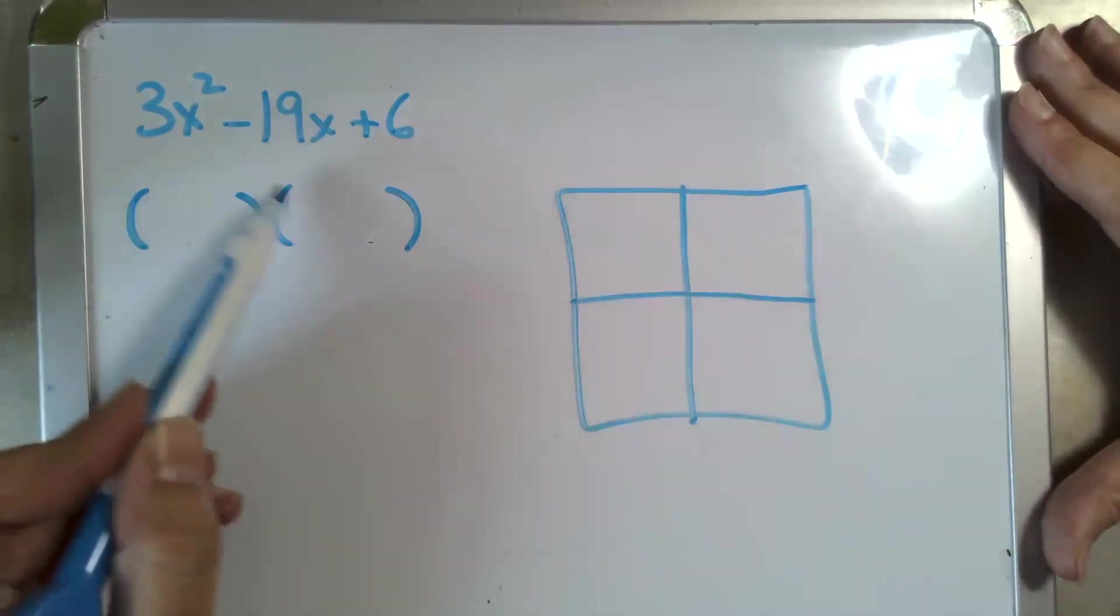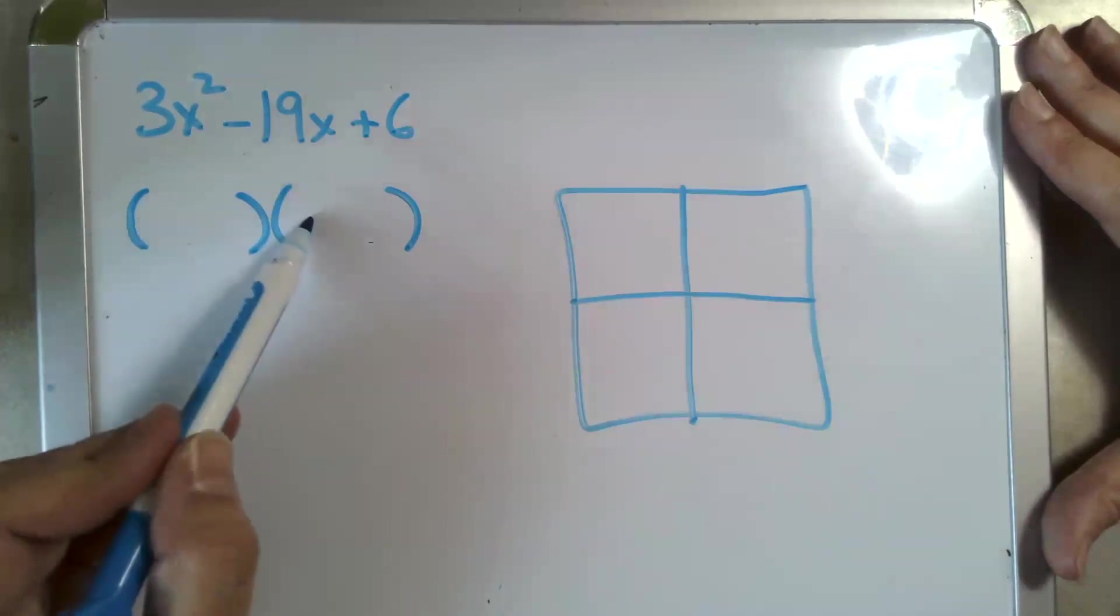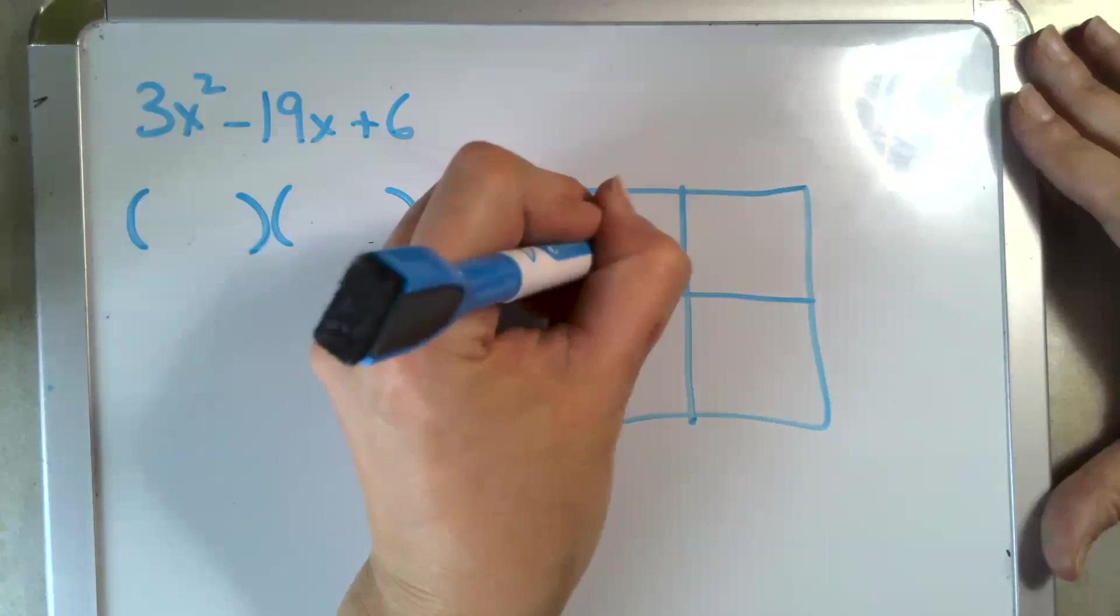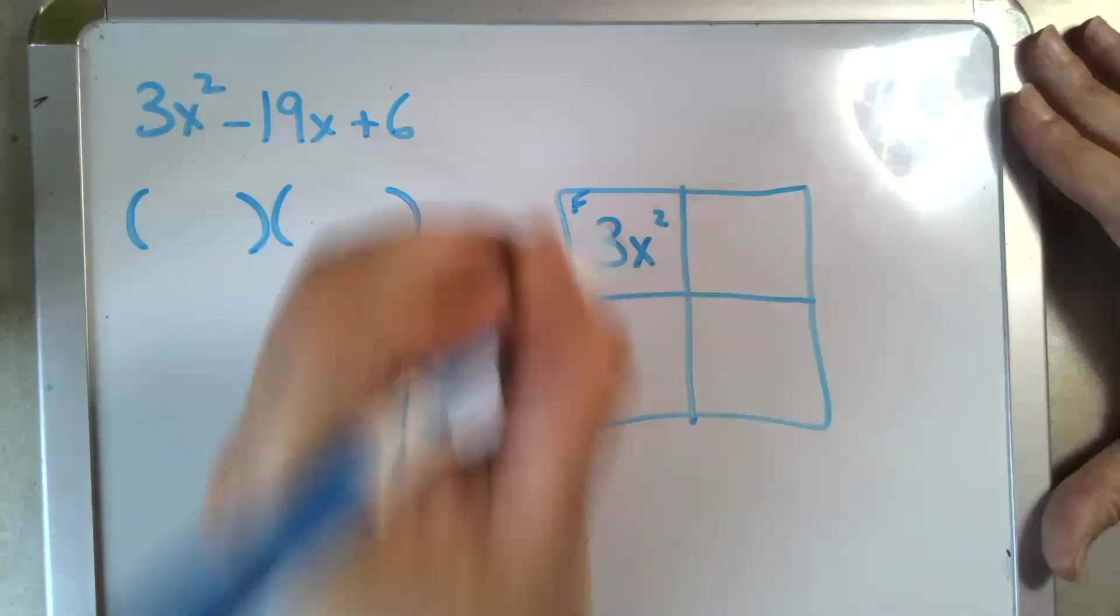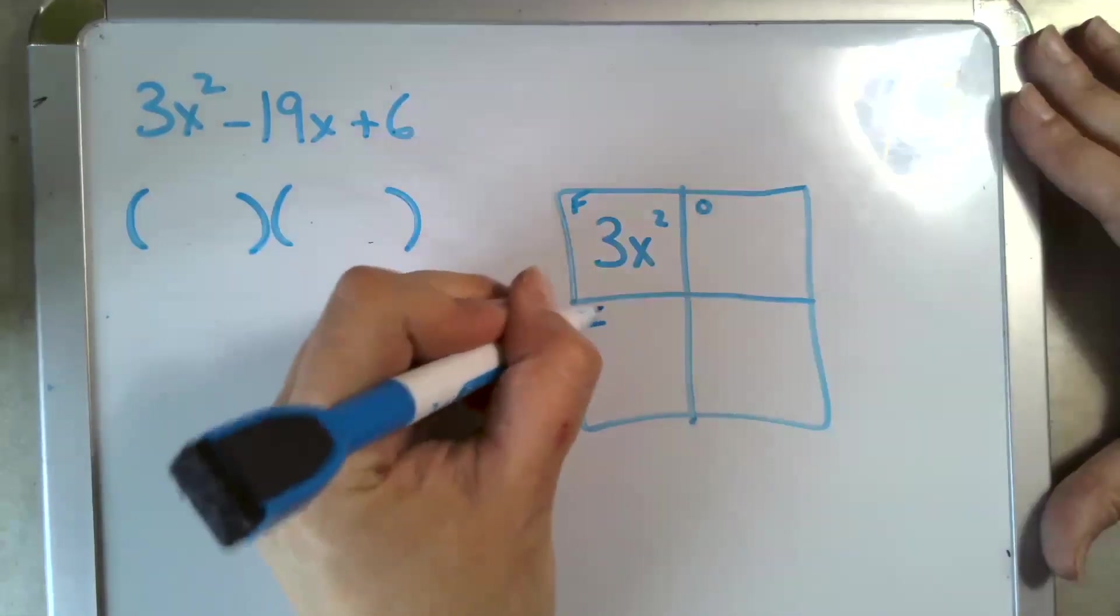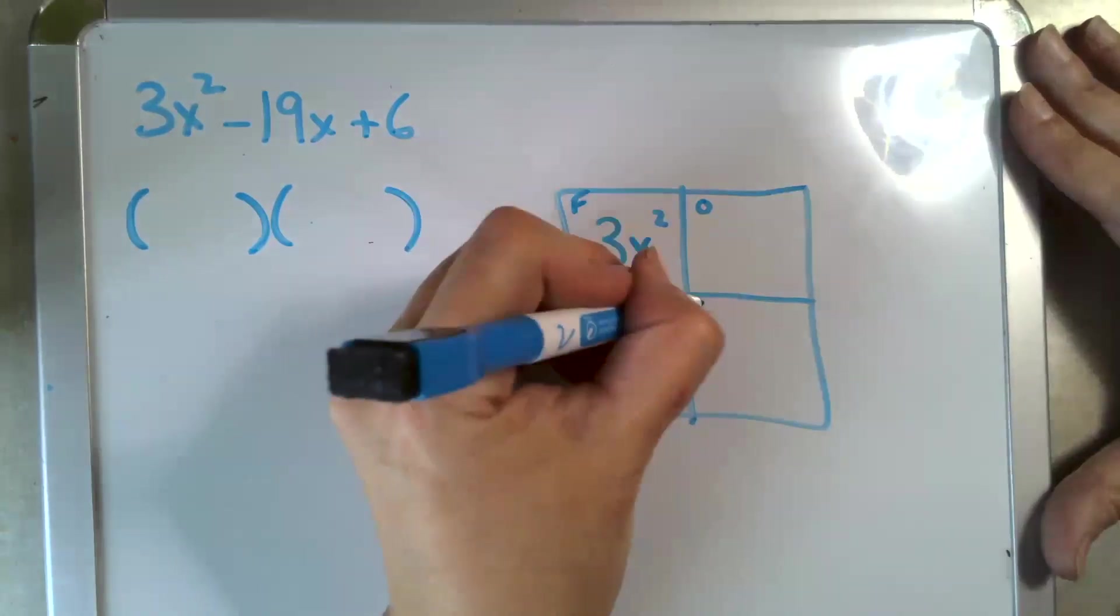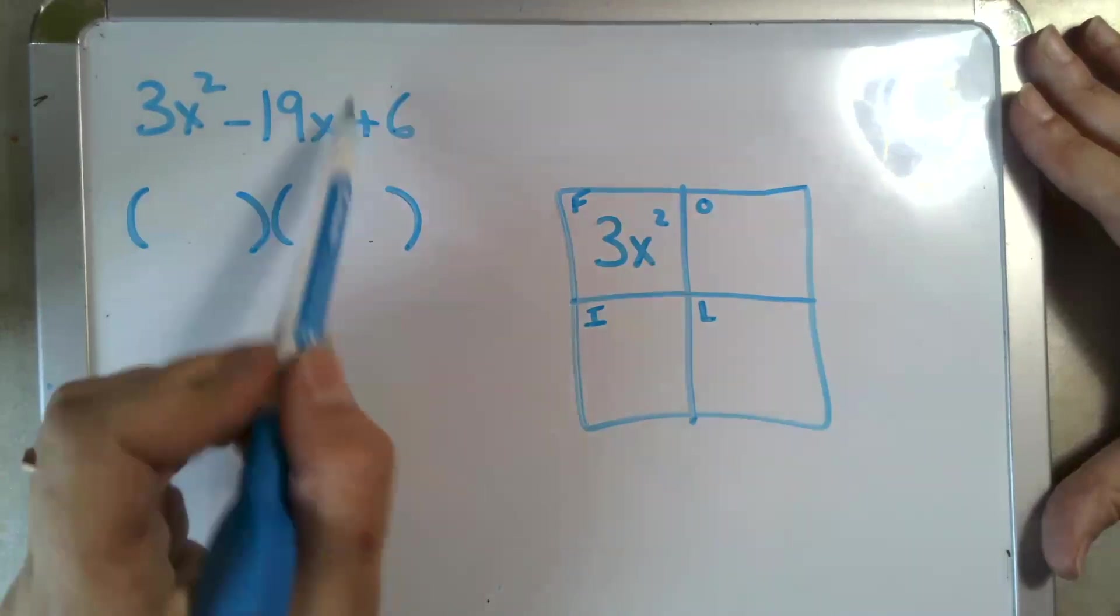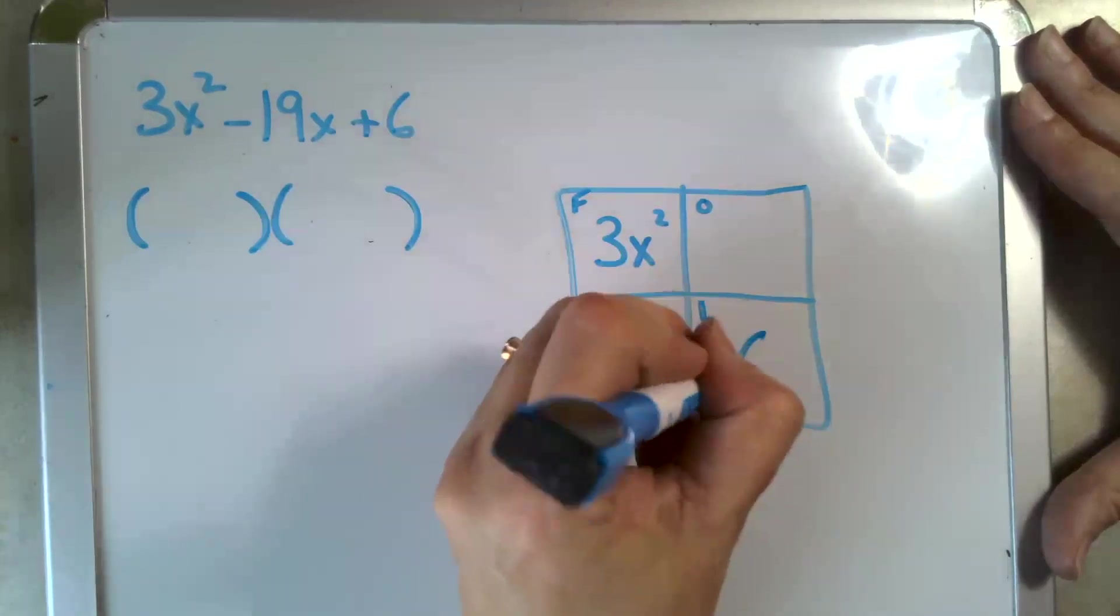We know that the first term times the first term results in 3x², so we put that in our first box. These will be our outsides and insides. We also know that our lasts are created by multiplying the last terms, which gives us 6 in the bottom right.